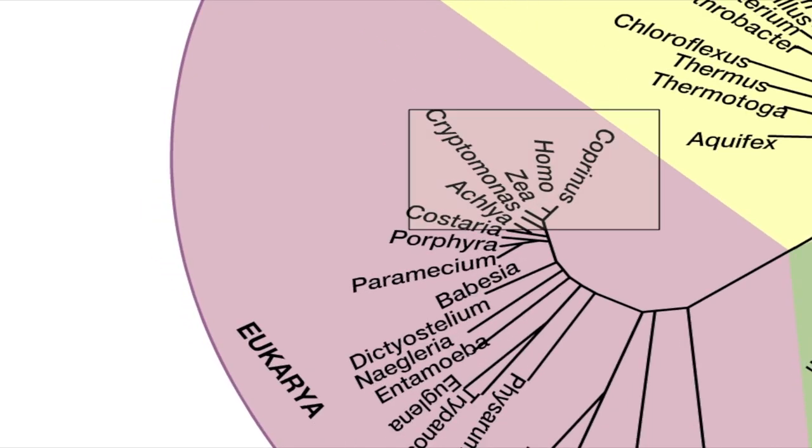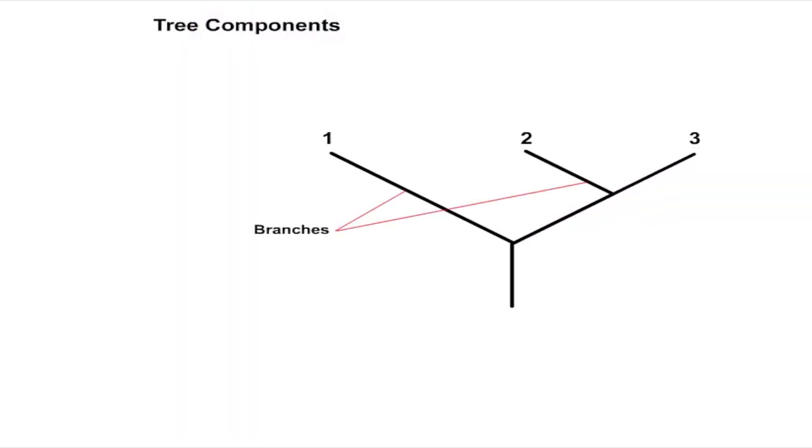Phylogenetic trees are composed of branches that connect two or occasionally more nodes. There are two kinds of nodes: terminal nodes and internal nodes.